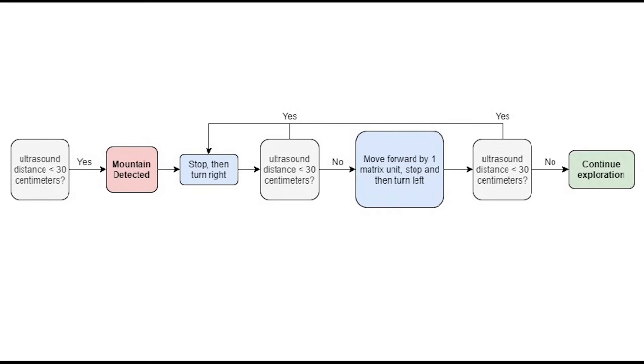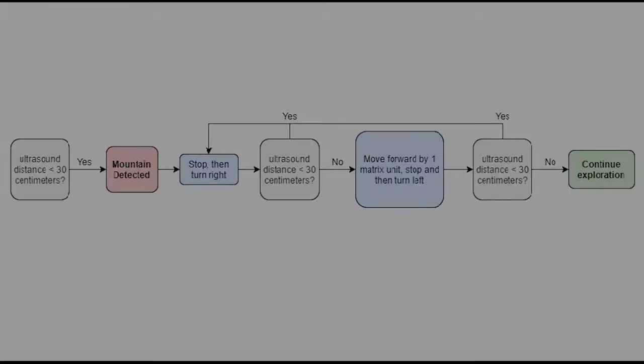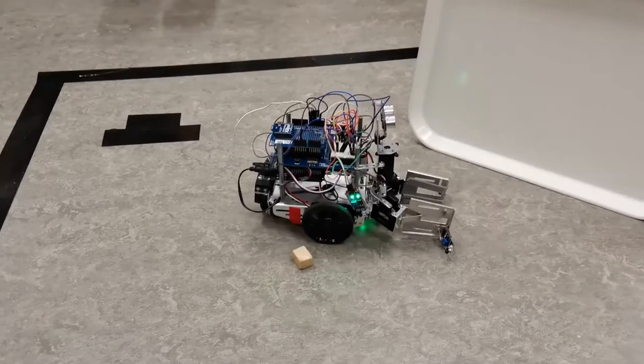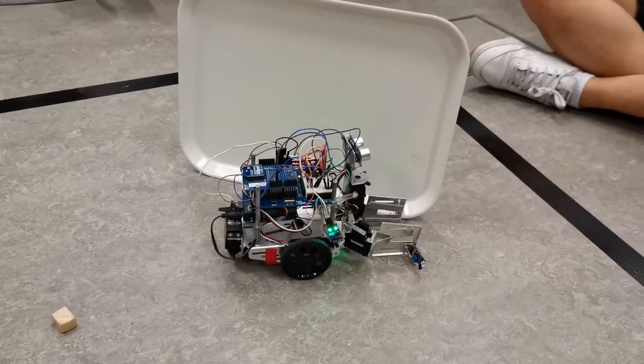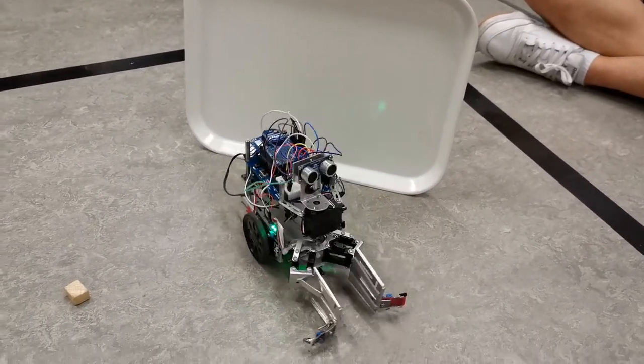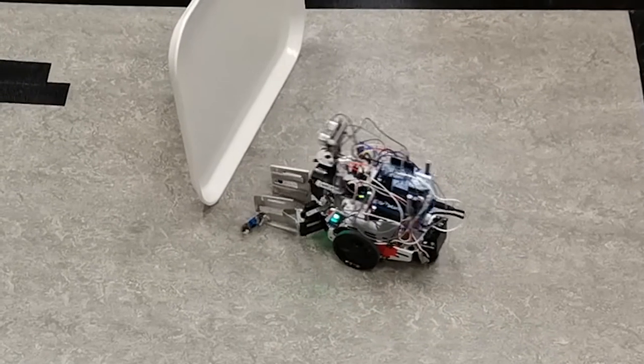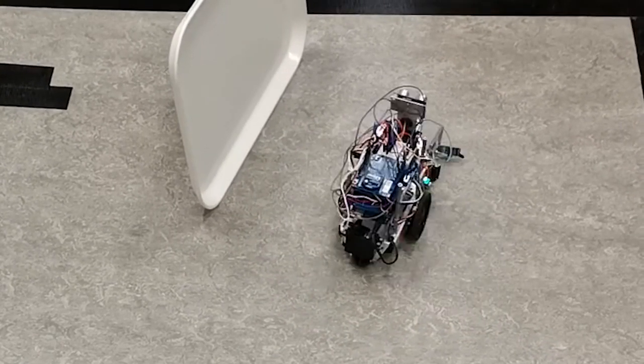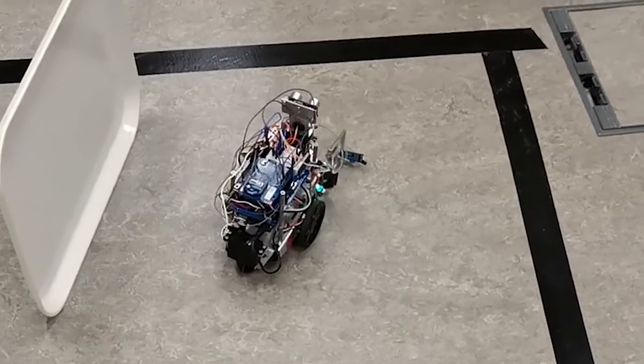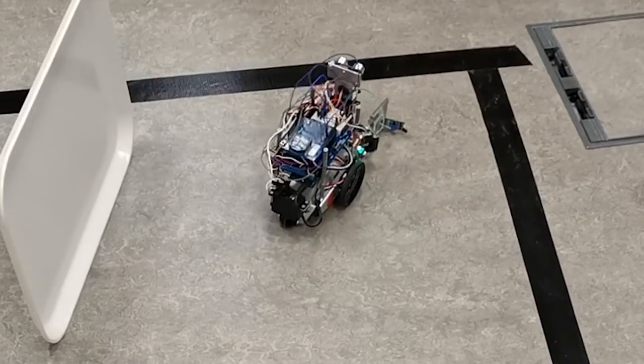The following flowchart shows the algorithm used to avoid mountains. Whenever the ultrasound sensor detects something less than 30 centimeters in front, the bot will stop immediately. The bot will then turn to the right and check the ultrasound sensor again. If an object is still within 30 centimeters of the bot, it will turn right again.